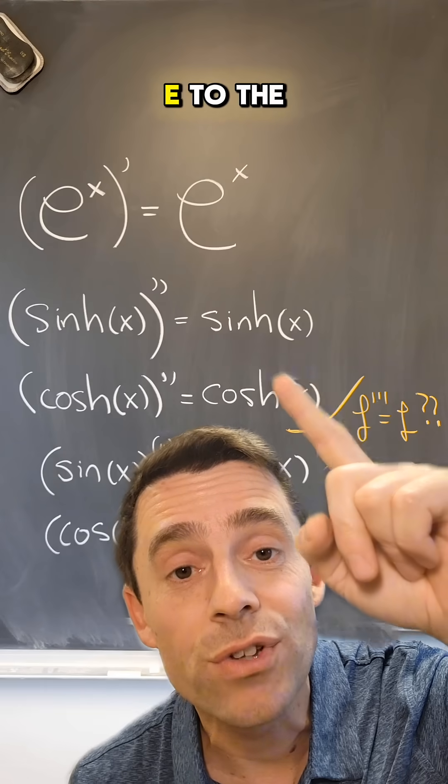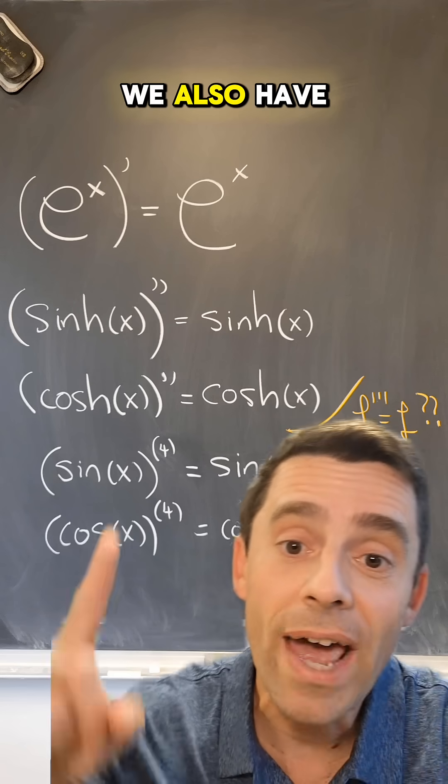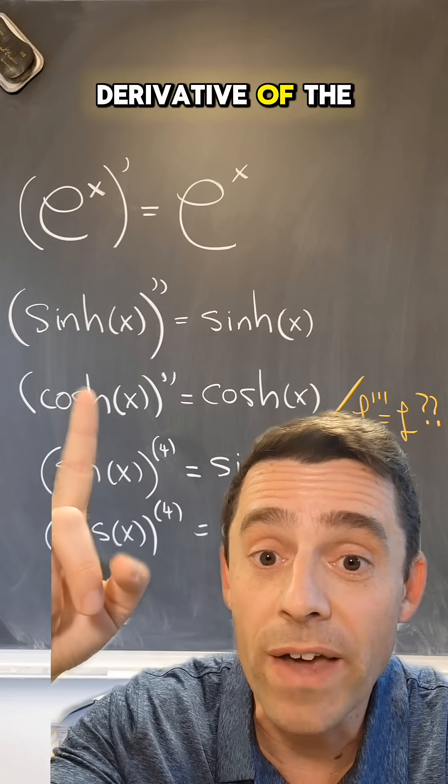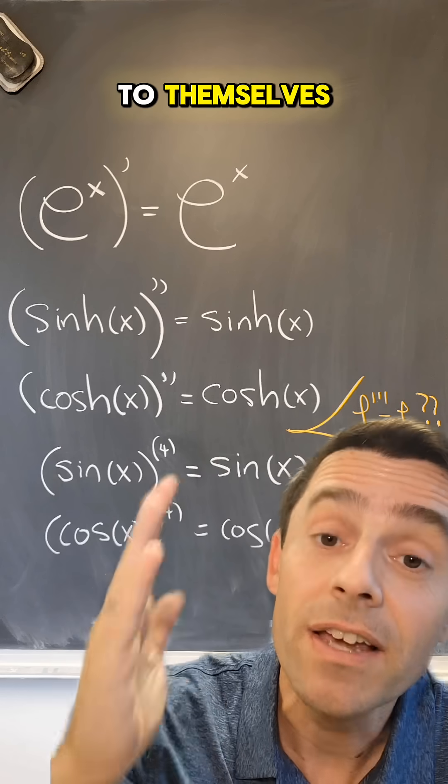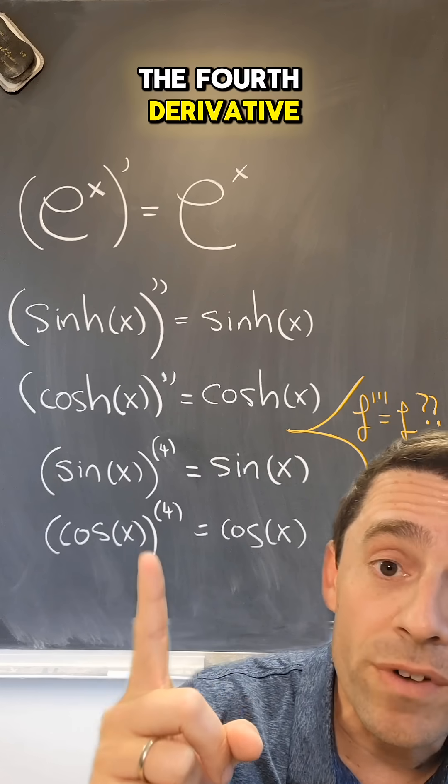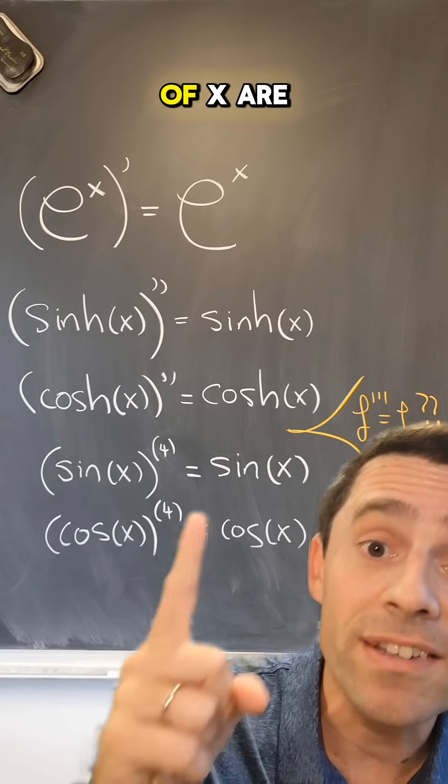Just like the first derivative of e to the x is e to the x, we also have that the second derivative of the hyperbolic sine and hyperbolic cosine is equal to themselves. Similarly, the fourth derivative of sine of x and cosine of x are themselves.